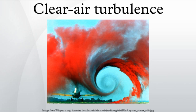The tropopause is a layer which separates two very different types of air. Beneath it, the air gets colder and the wind gets faster with height. Above it, the air warms and wind velocity decreases with height. These changes in temperature and velocity can produce fluctuations in the altitude of the tropopause, called gravity waves.